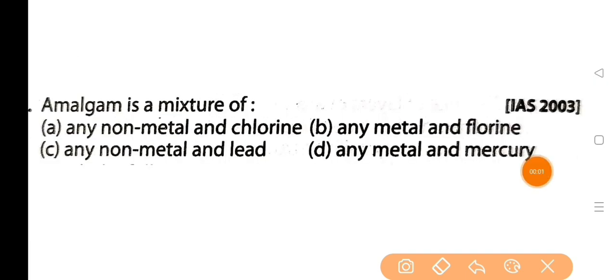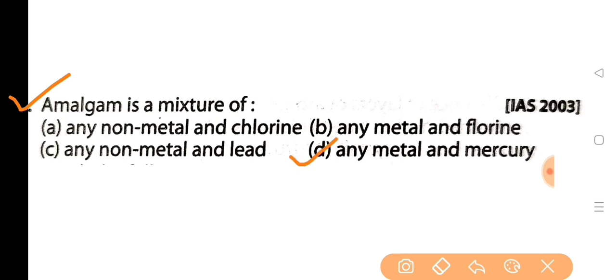Next question: amalgam is a mixture of — amalgam ki? The answer is option D: any metal and mercury.